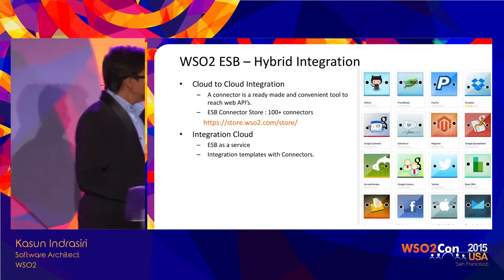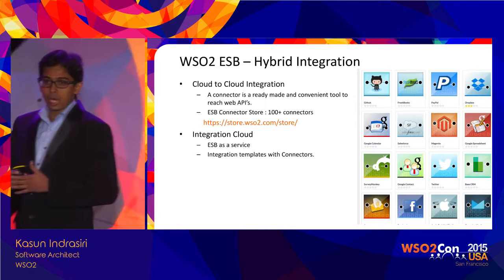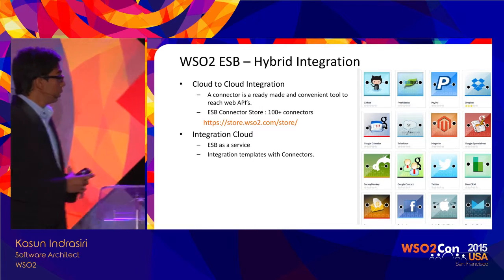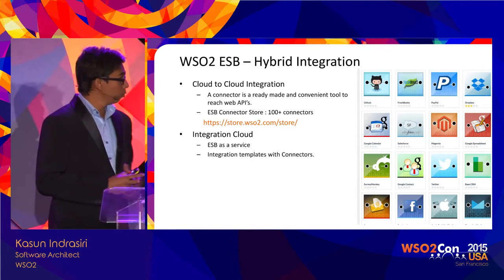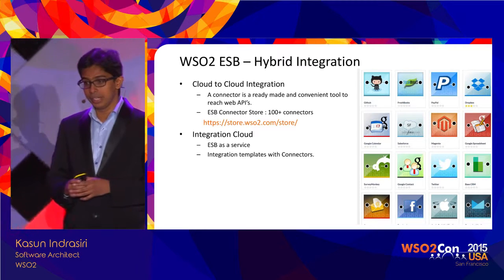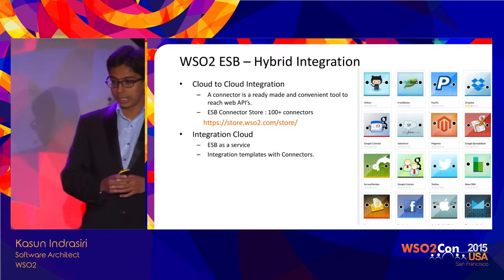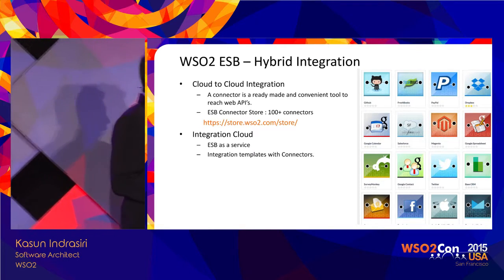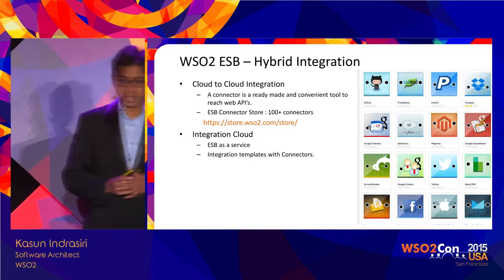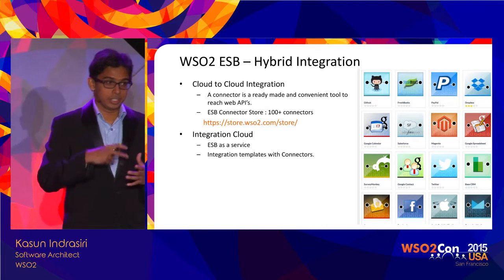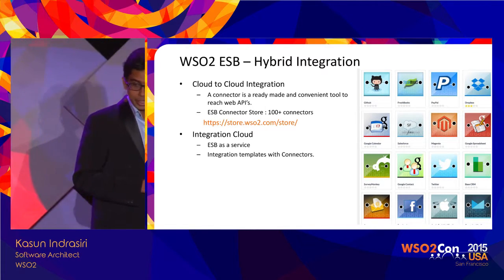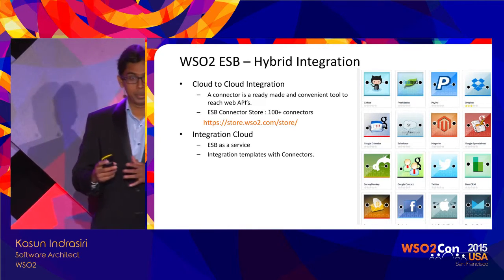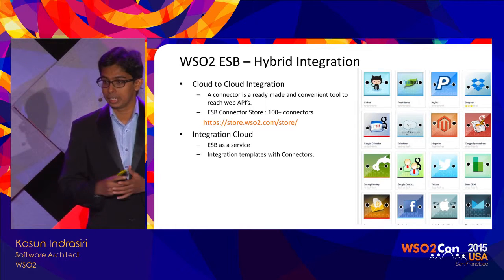When it comes to hybrid integration — cloud-to-cloud and cloud-to-on-premise integration — we offer cloud connectors or ESB connectors. With the 4.9 release, we released 100-plus cloud connectors to connect to different web APIs and cloud APIs. We are also working on a new Integration Cloud, which offers ESB-as-a-service capability along with different integration templates to connect different cloud connectors.